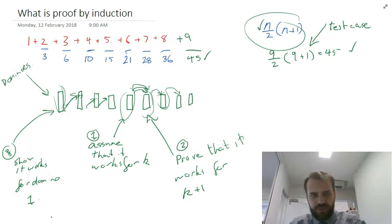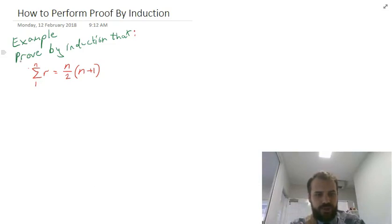If you need to go back, go back and watch that again. Here's our example. We're going to prove by induction that the sum of all r from 1 to n is equal to n over 2 times n plus 1.